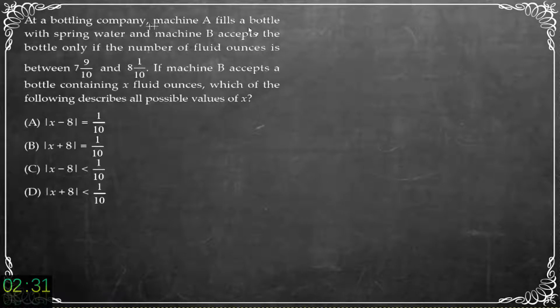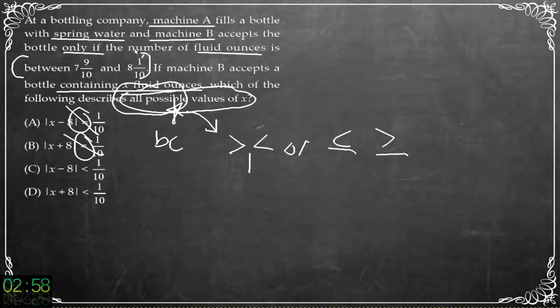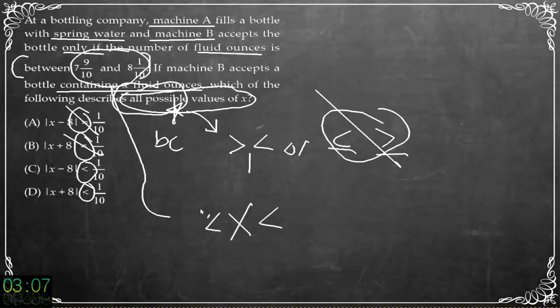At a bottling company machine A fills a bottle with spring water and machine B accepts the bottle only if the number of fluid ounces is between 7.9 and 8.1. If the machine B accepts a bottle containing x fluid ounces which of the following describes all possible values of x? All right well all possible values of x that's not going to be an equation answer. So A and B are out. It's going to be some sort of inequality. It'll be less than or equal to or greater than or equal to or just less than or greater than.